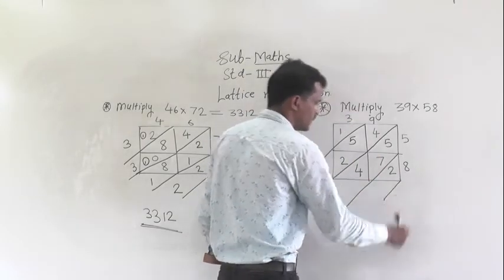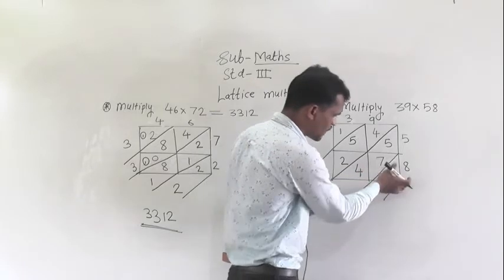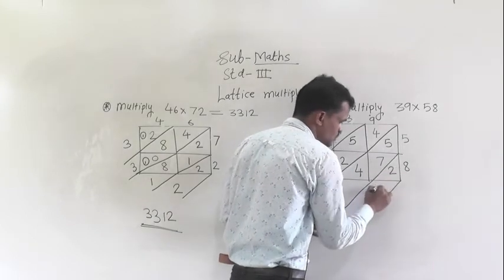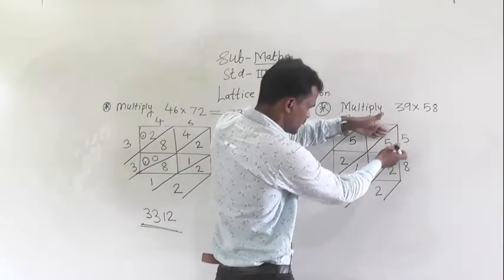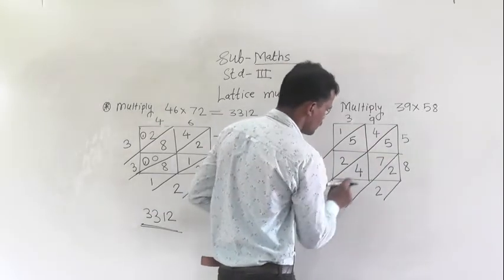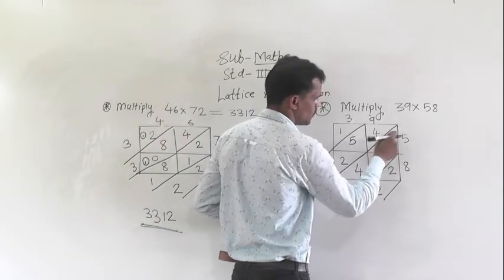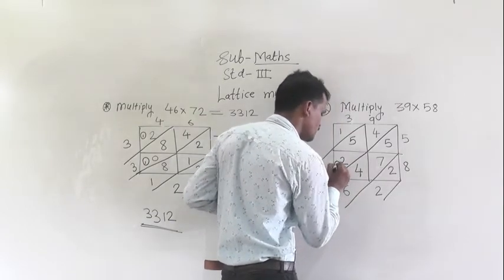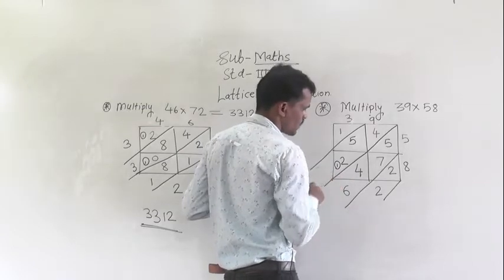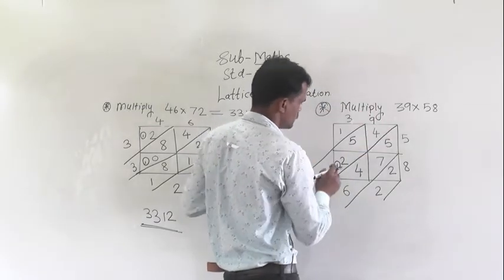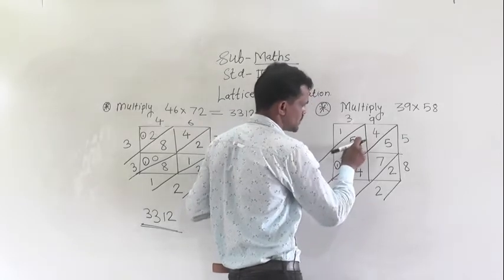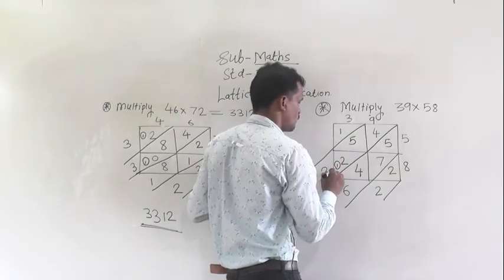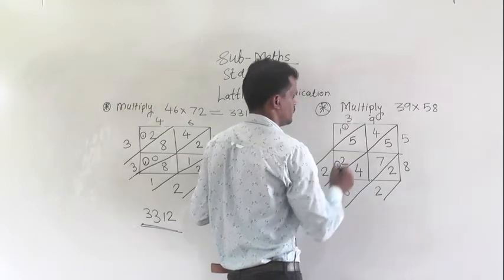Now add the columns, starting from the bottom going to the top. Here only 2 is there, so write 2. Then add this diagonal: 4 plus 7 is 11, 11 plus 5 is 16. So 16 means write 6 right here and 1 carry to the next column. Now add this column: 2 plus 5 is 7, 7 plus 5 is 12 with 1 carry, so write 2 right here and 1 carry to the next step.